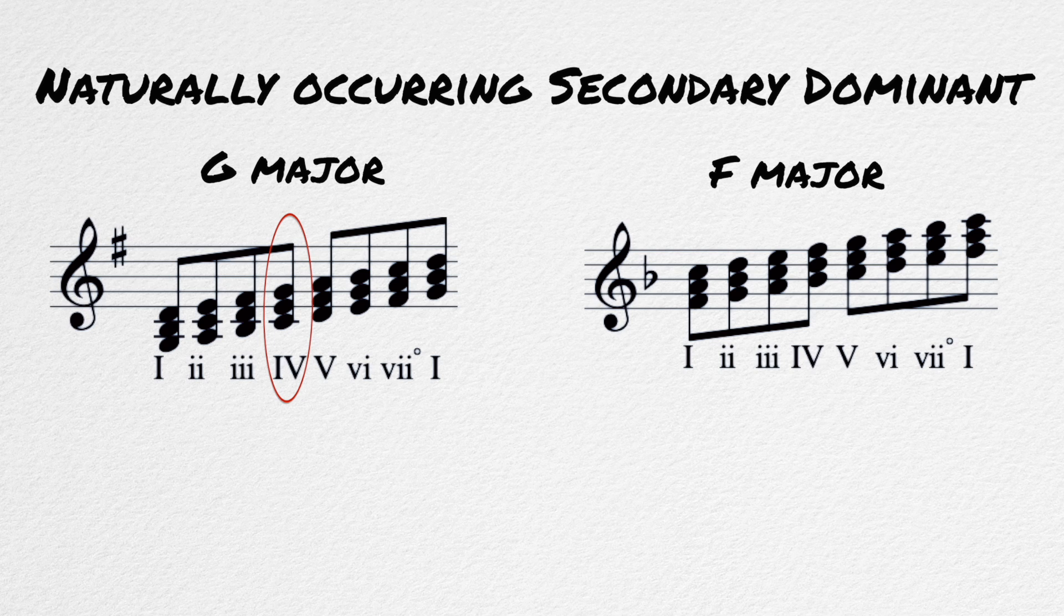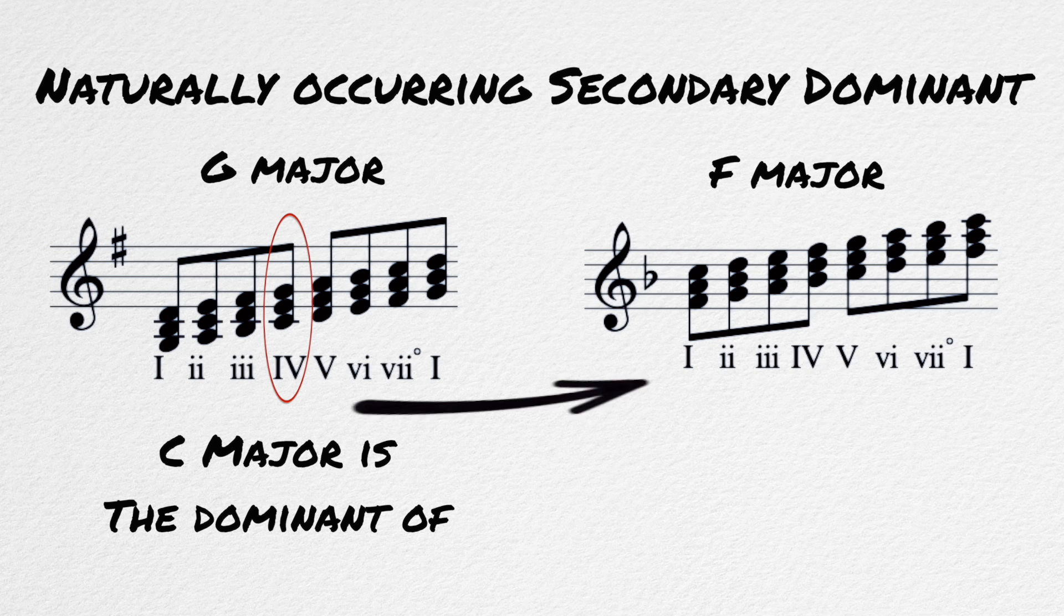The most common form of this is the IV chord in major. In G major, the C major IV chord can act as a secondary dominant that resolves to the flat VII, F major. So that chord will have a natural pull towards and can be resolved to a chord that's outside of the key, F major.